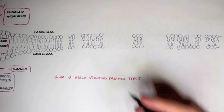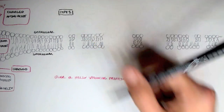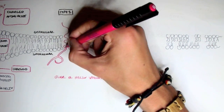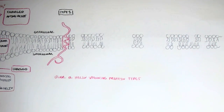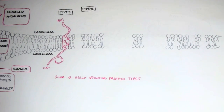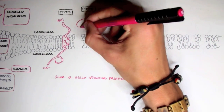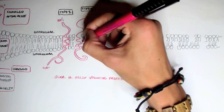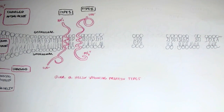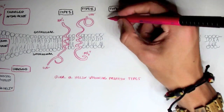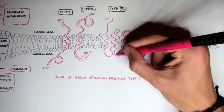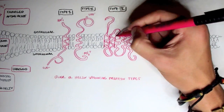Type 1 is a single transmembrane protein with the amino domain in the extracellular fluid and the carboxyl group in the intracellular fluid. Type 2 is the opposite — still a single transmembrane helical protein but the amino group is in the intracellular fluid and the carboxyl group is in the extracellular fluid. Type 3 is a multiple transmembrane helix in a single polypeptide, which usually initiates a conformational change, for example from outside to inside, such as a receptor.